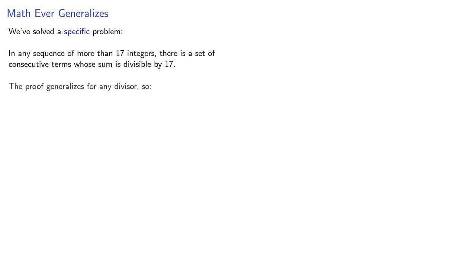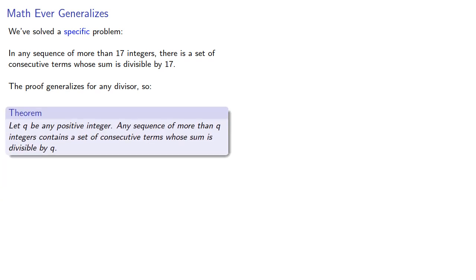And the proof generalizes for any divisor. So this actually gives us a theorem. Let q be any positive integer. Any sequence of more than q integers contains a set of consecutive terms whose sum is divisible by q. And that is the problem we originally started with.